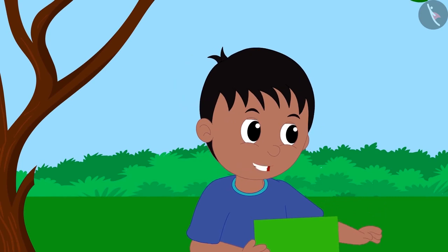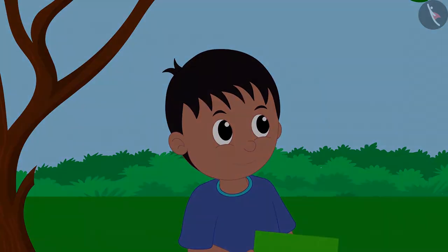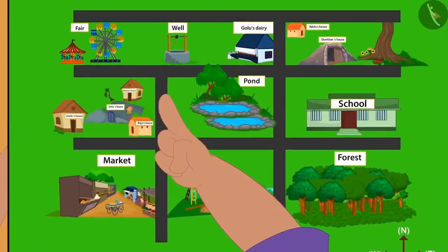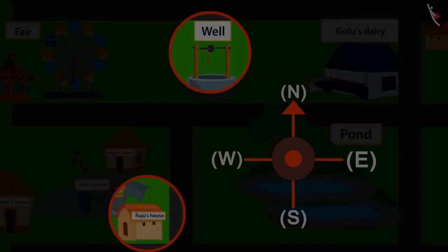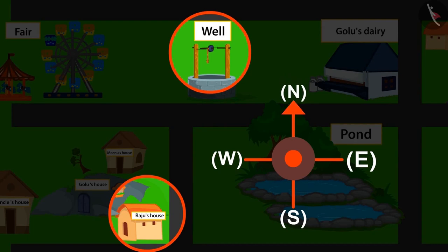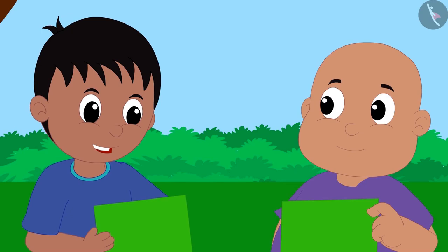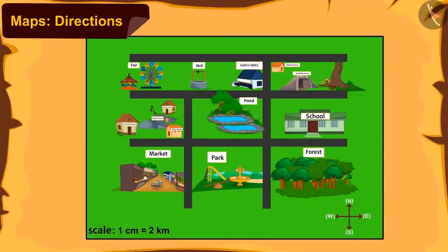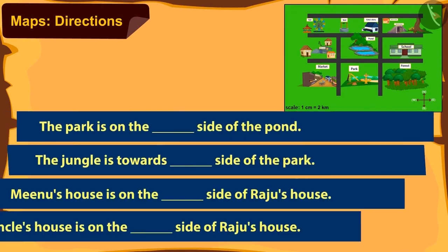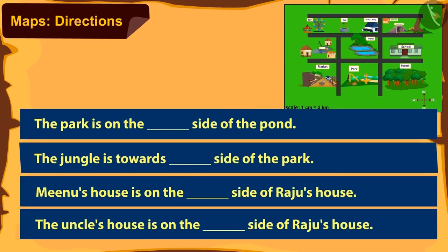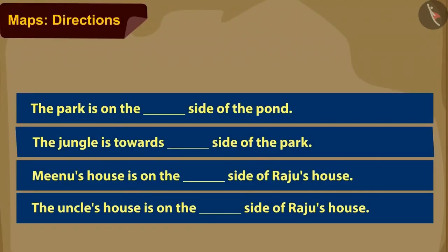Raju asks which direction the well is from his home. Bablu says this is Raju's home and this is the well. The well is above Raju's home on the map, which means, according to the compass, the well is towards the north from his house. Bablu's answer is absolutely right. Kids, can you use the compass to complete the table? You can pause the video to find the answer. Very nice, kids — you have answered all of them absolutely right.